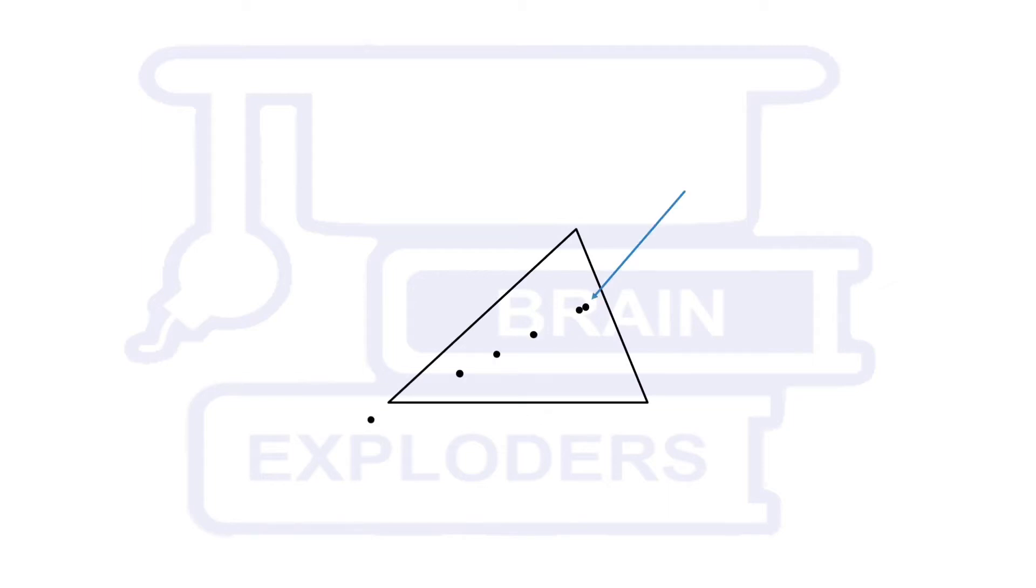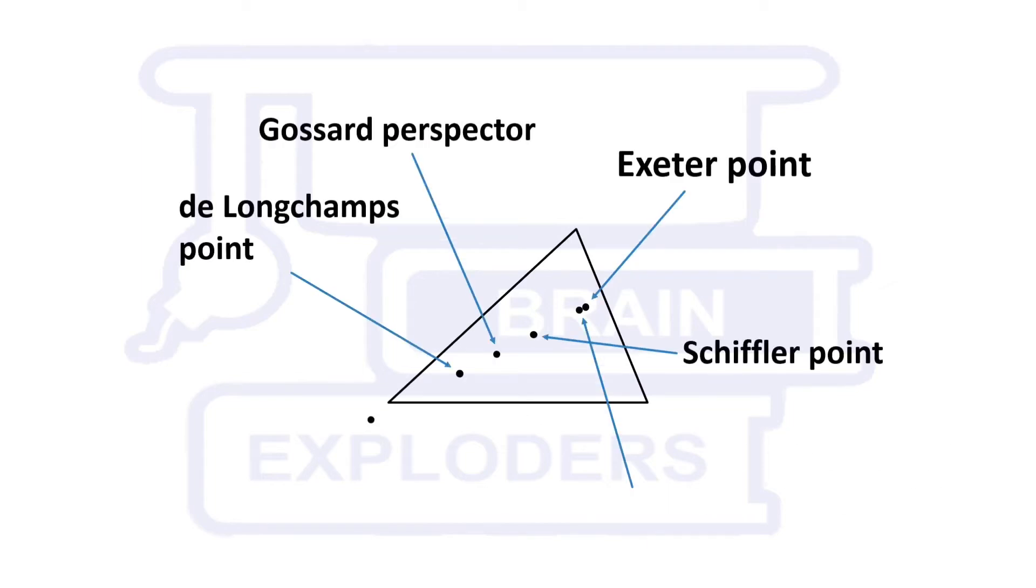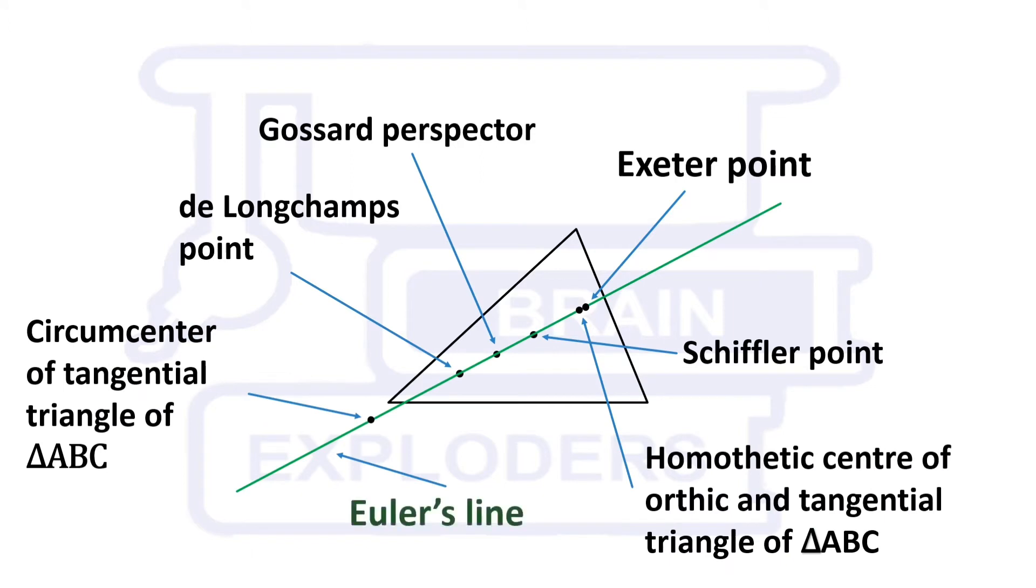Do you know that many of the important points of a triangle are collinear and the line passing through these points is called Euler's line.